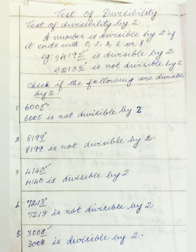Example: 4192. The last digit is 2, so 4192 is divisible by 2. The next one is 2135. The last digit is 5, so this number is not divisible by 2. It does not end in 0, 2, 4, 6, or 8. So 2135 is not divisible by 2.